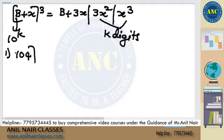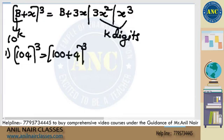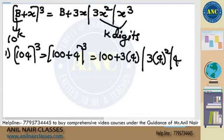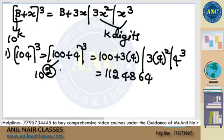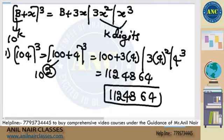104 whole cube. These are nothing but 100 plus 4 power 3. B is 100, X is 4. So this will be B plus 3x. Next is 3x square. And next is x cube. This is 112, 48, 64. 100 is 10 square. Last two places should have two digits. Answer is 112, 48, 64.